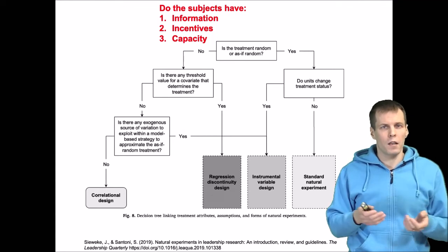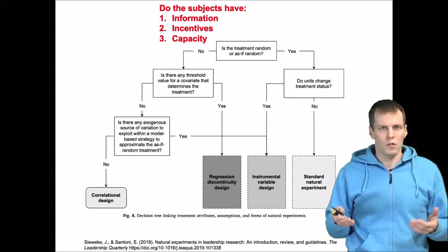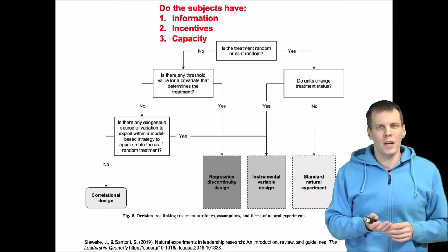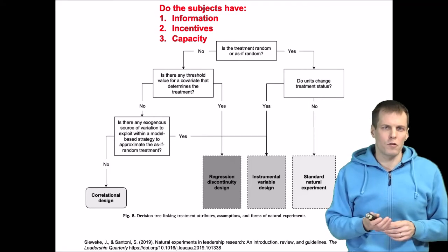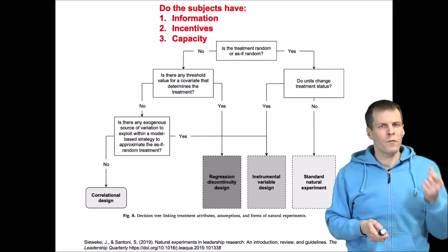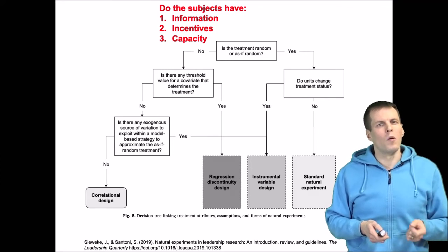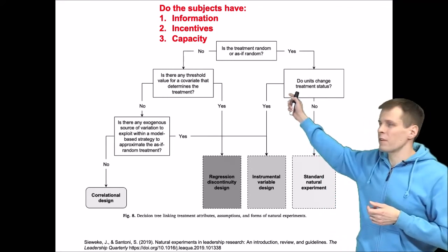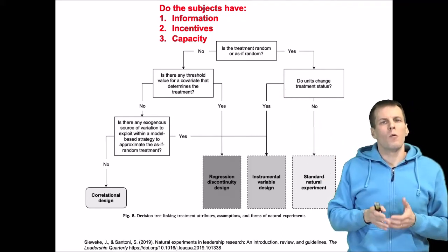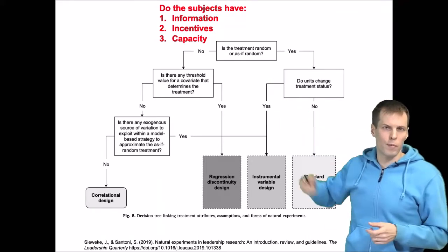The third consideration is capacity — can people actually make a decision? For example, if someone else is administering the medication rather than the individual themselves, the individual wouldn't have the capacity to self-select. If individuals have information, incentives, and capacity, we can infer that the treatment is probably not as-if random. If one of these is missing, then the as-if random assumption is probably more defensible.